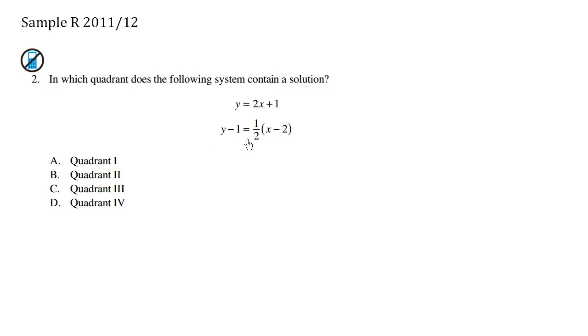I'm going to simply rewrite this second one as y equals, I'm going to add 1 to both sides, 1 half x minus 2 plus 1. So we have this here, and then we have this here. Now the two y values, they're essentially equals to each other, so we're going to set this equals to that in order to find the solution.